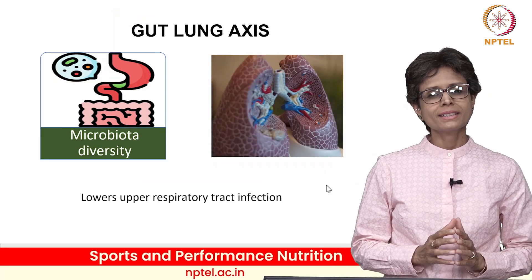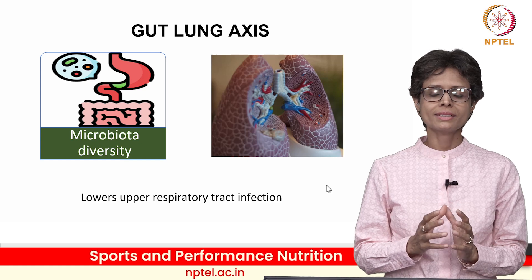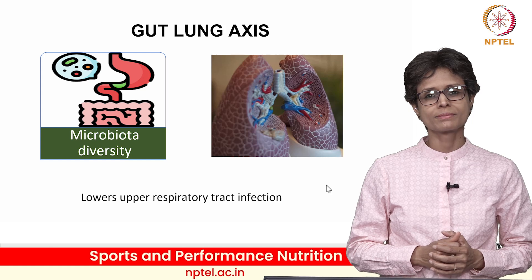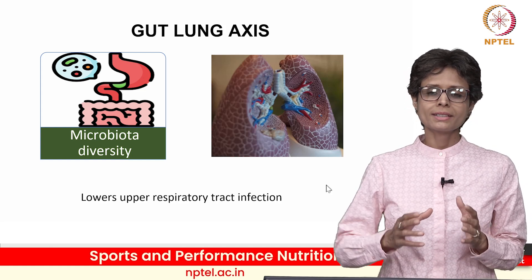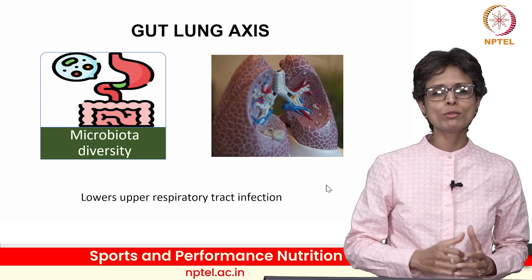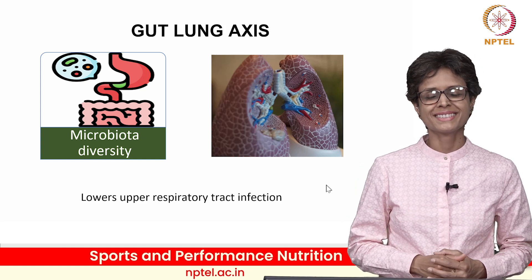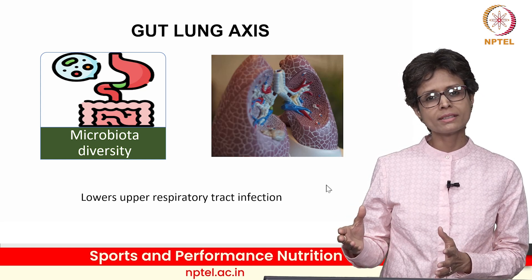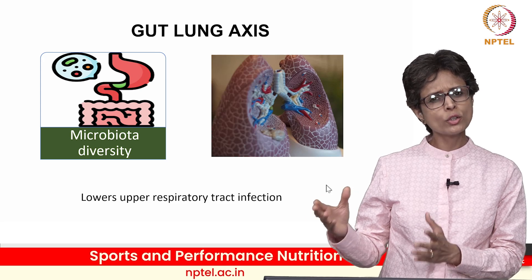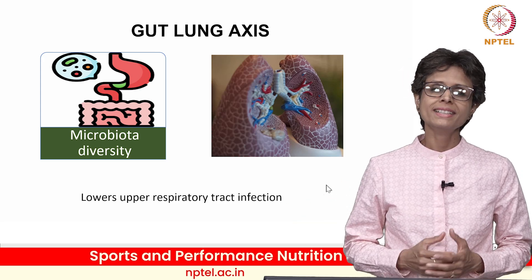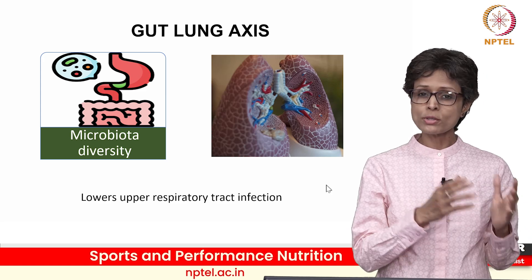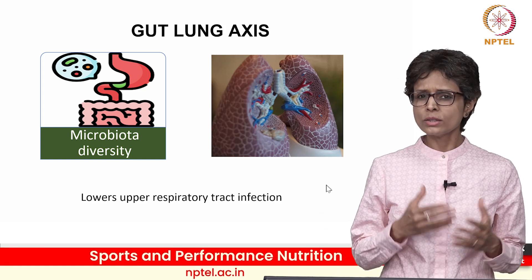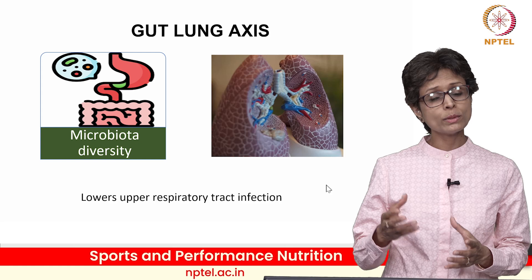In COVID, a new dimension of immune function was identified — the gut and lung axis. People with a good gut microbiome had better immune function and could fight COVID. Athletes on prebiotic fibers or consuming good probiotics through diet or supplements can improve their immune function and most importantly can prevent upper respiratory tract infections, which are commonly seen in overtrained athletes who recover very poorly.